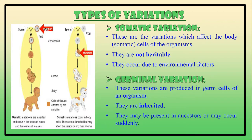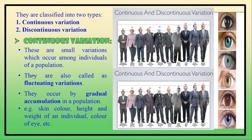The second type is germinal variation. These variations are produced in the germ cells of an organism — that is, the sperm or the egg — and they are inherited, meaning they are transmitted to the next generation. They may be present in the ancestors or may occur suddenly.